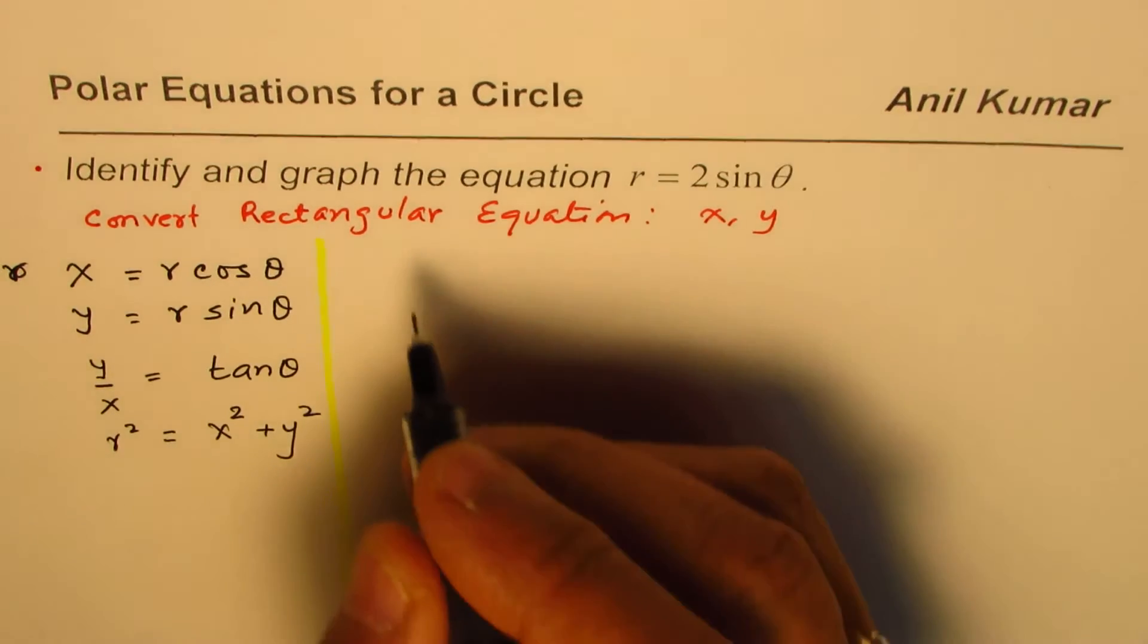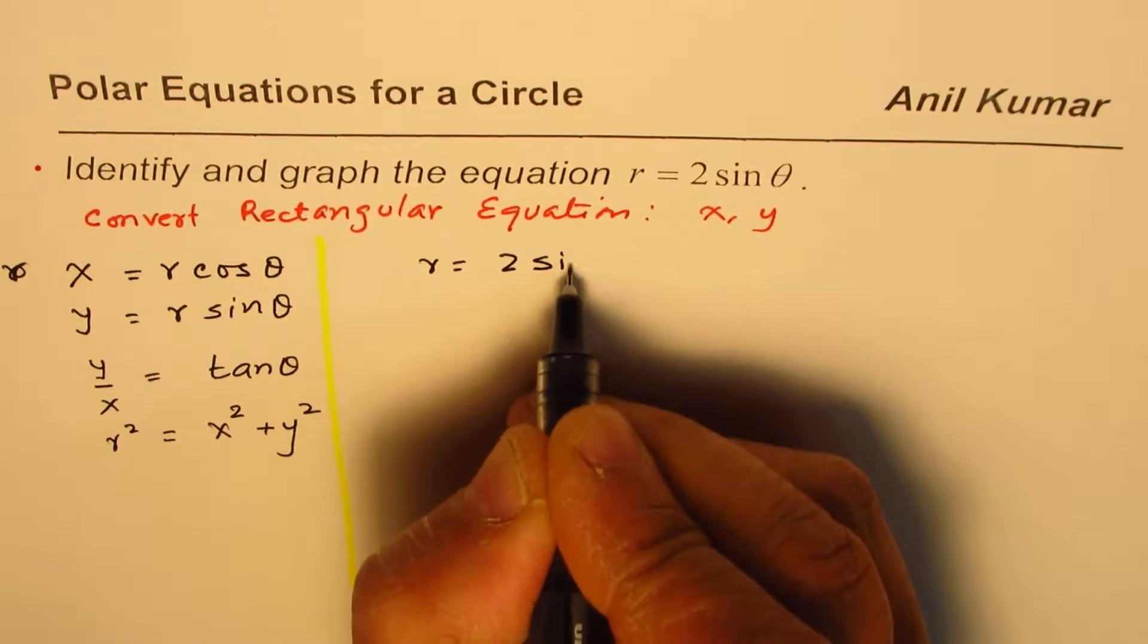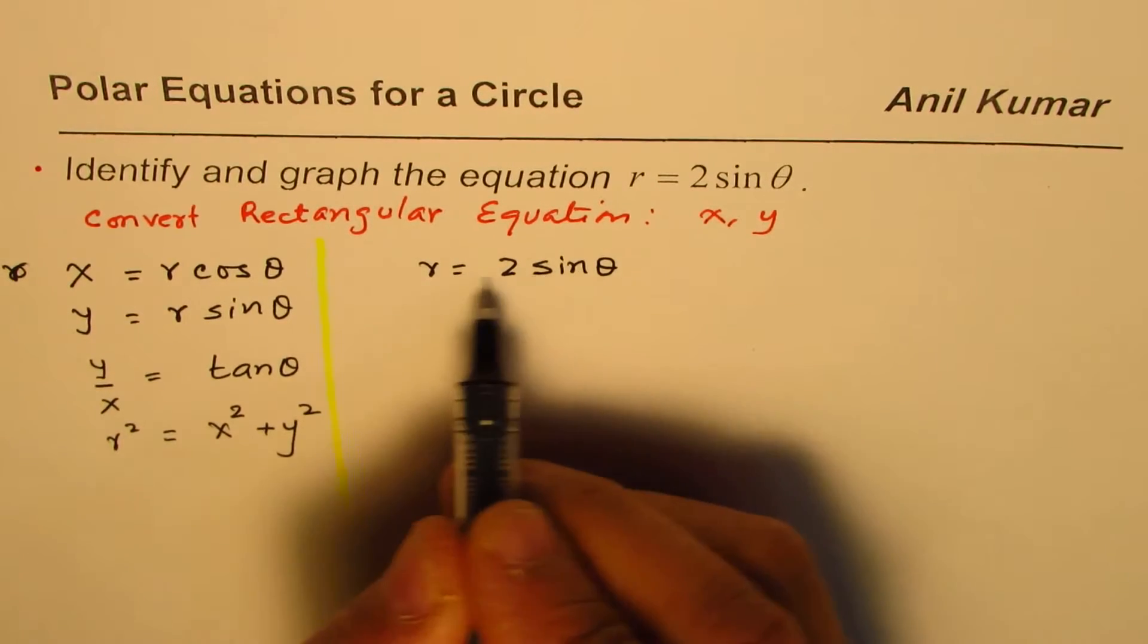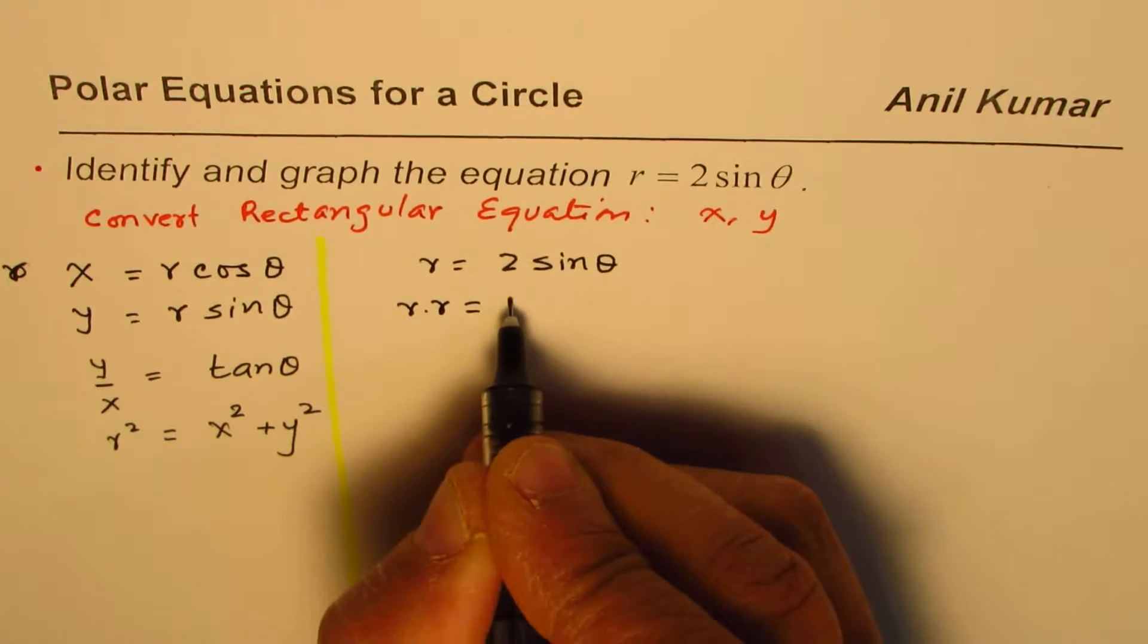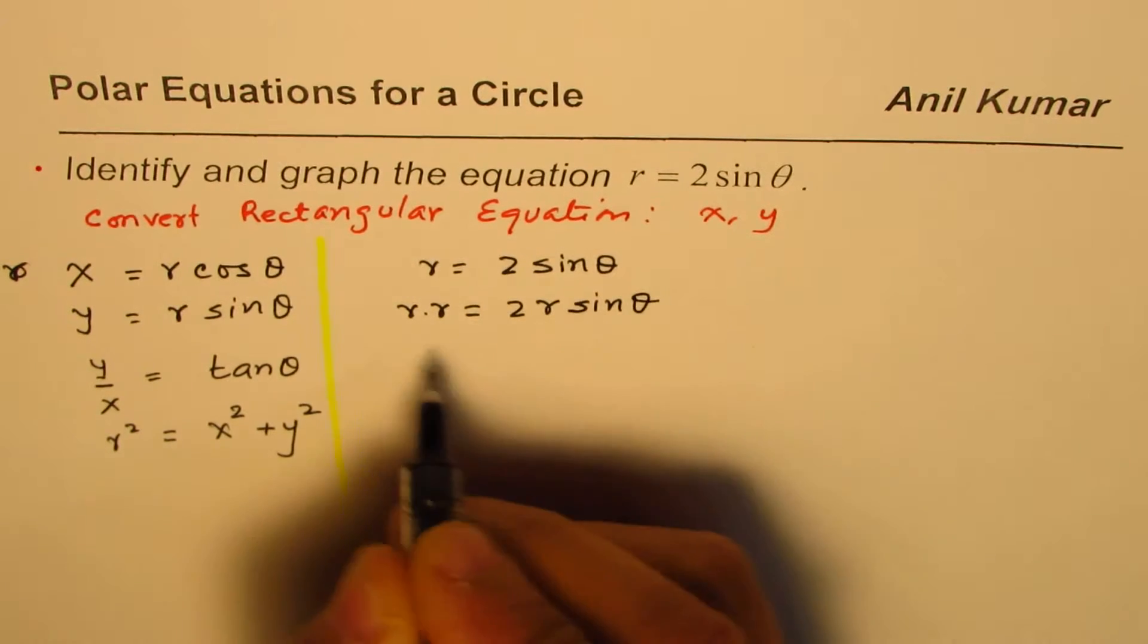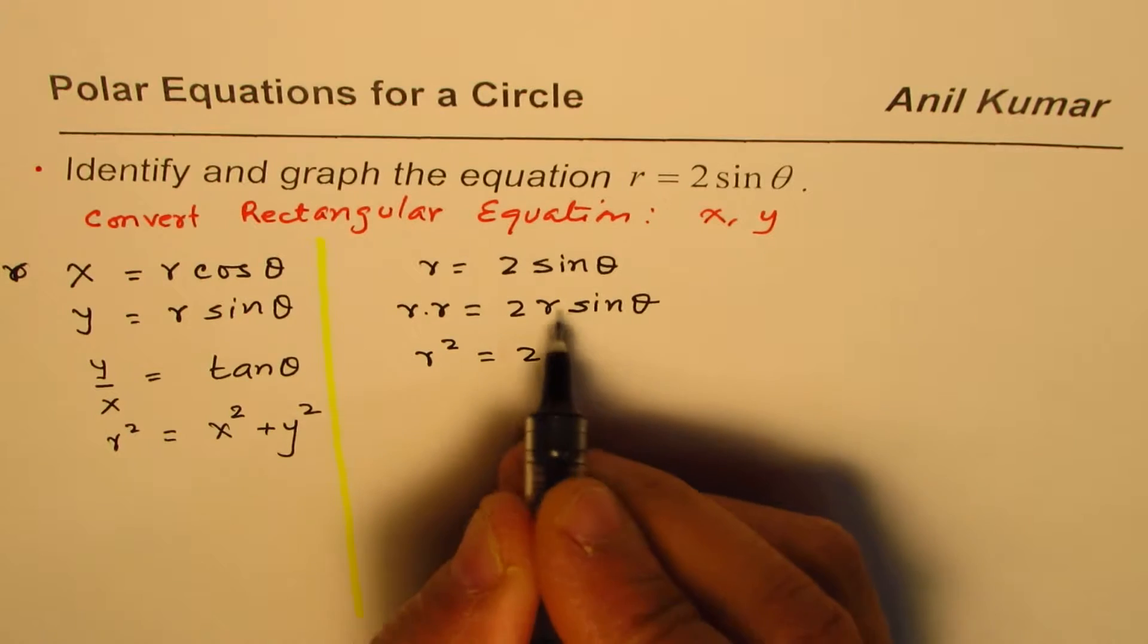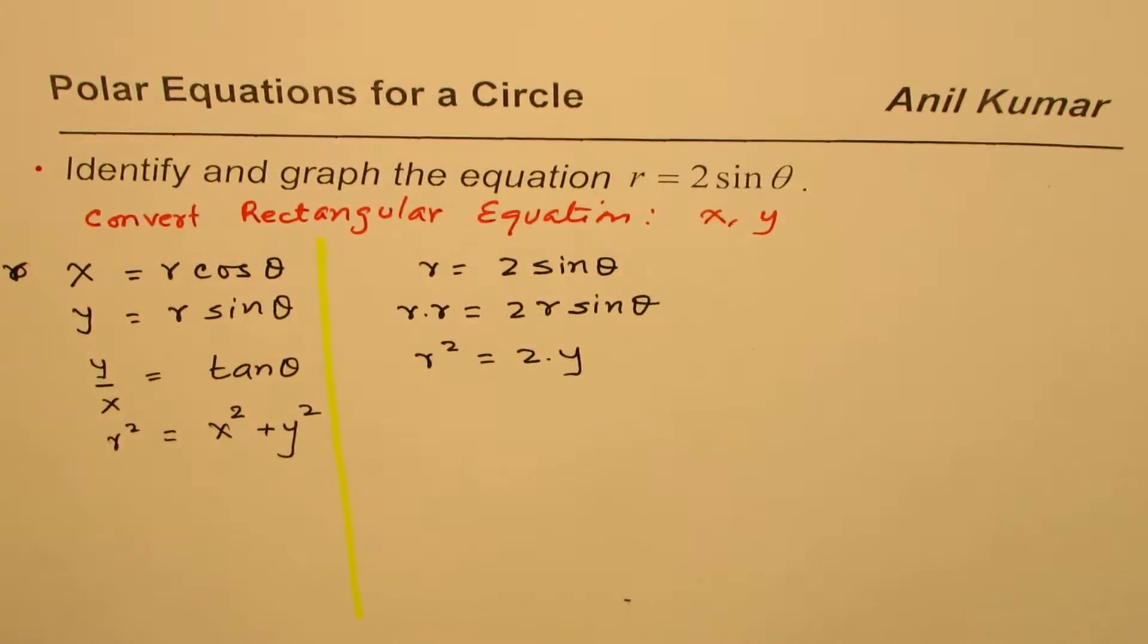We are given the equation r equals 2 sine theta. Now we know what r square is. It's a good idea to multiply by r on both sides. So if I multiply by r on both sides I get 2 times r sine theta. Now that is r square equals 2 times r sine theta, which is y. So I could write this as y.